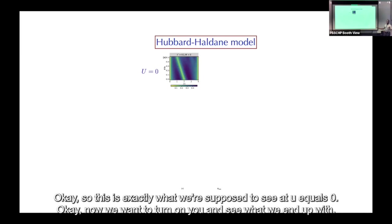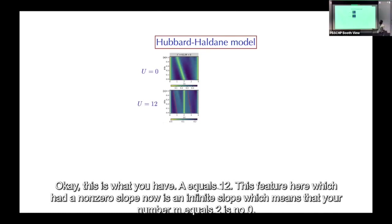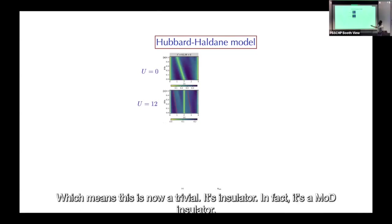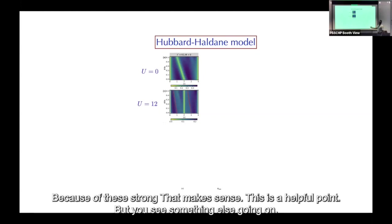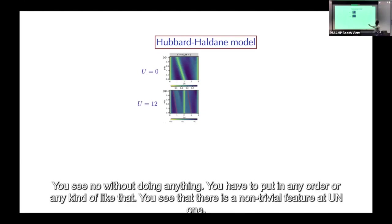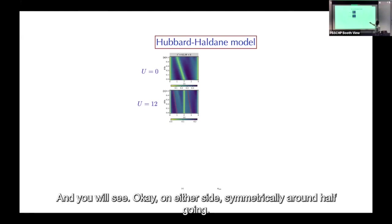Now we turn on U. At U=12, the feature that had a non-zero slope now has infinite slope, meaning the Chern number at ν=2 is now zero — this is a trivial Mott insulator at ν=2 due to strong interactions. But something else appears: without putting in any order by hand, you see a non-trivial feature at ν=1 and ν=3, symmetrically around half filling.